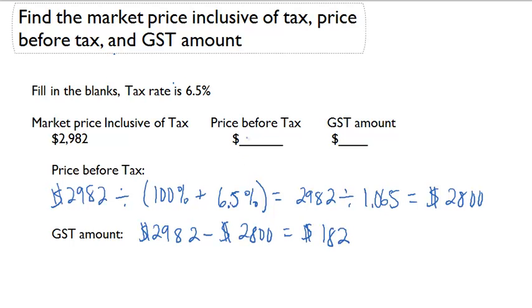So the price before the tax had to be $2,800, and the GST amount, $182. We'll see you in the next video.